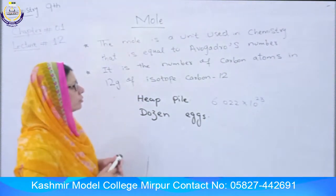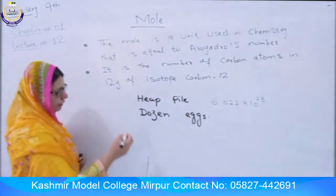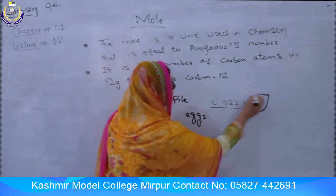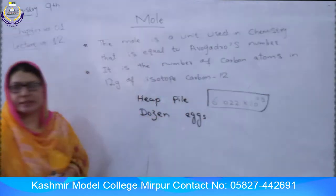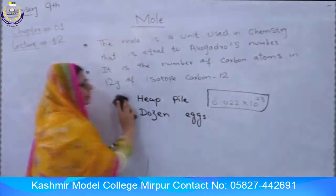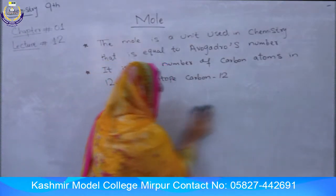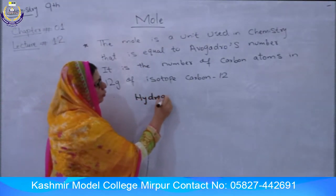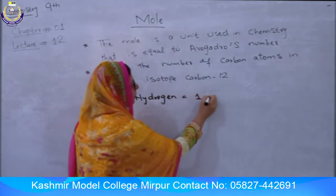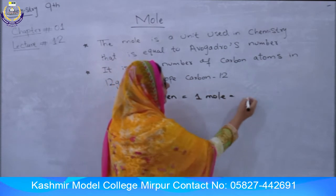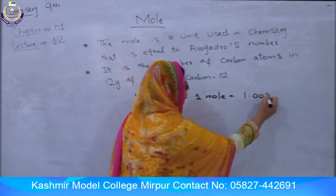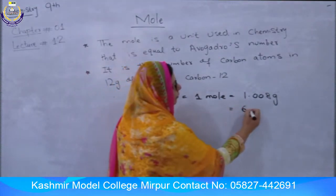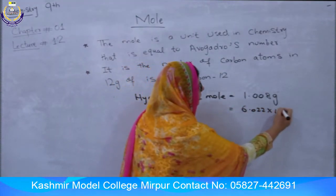When we look at this, we can relate 1 mole to 6.022 × 10²³ particles. In terms of hydrogen, 1 mole of hydrogen has a mass of 1.008 grams and contains 6.022 × 10²³ atoms.